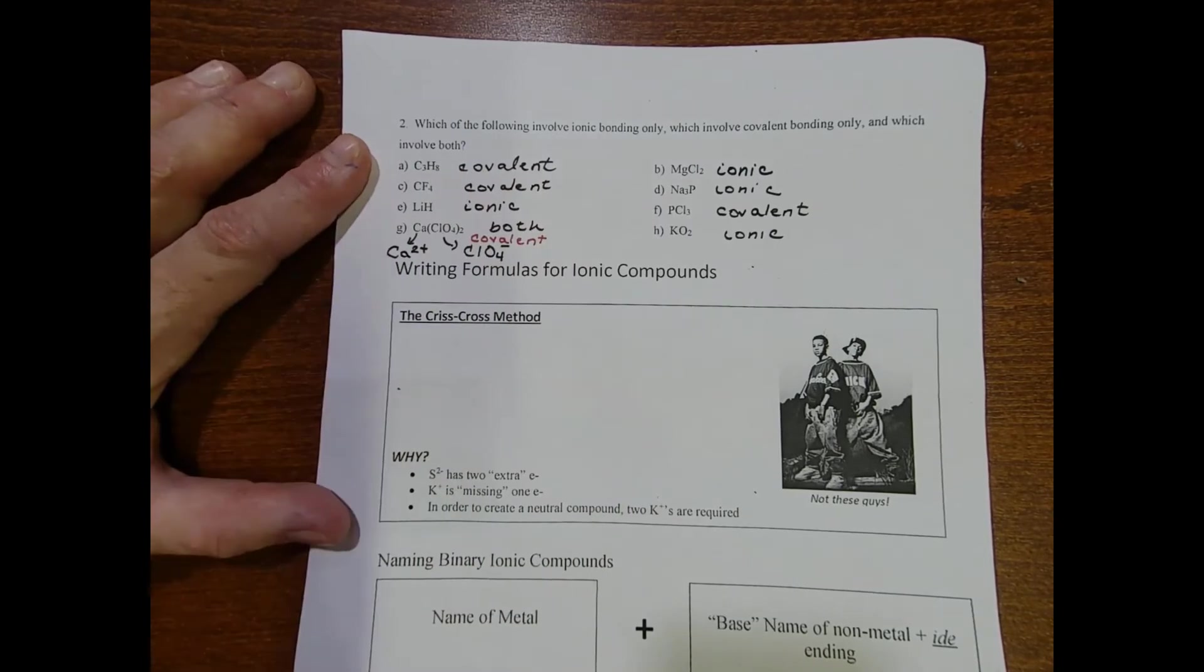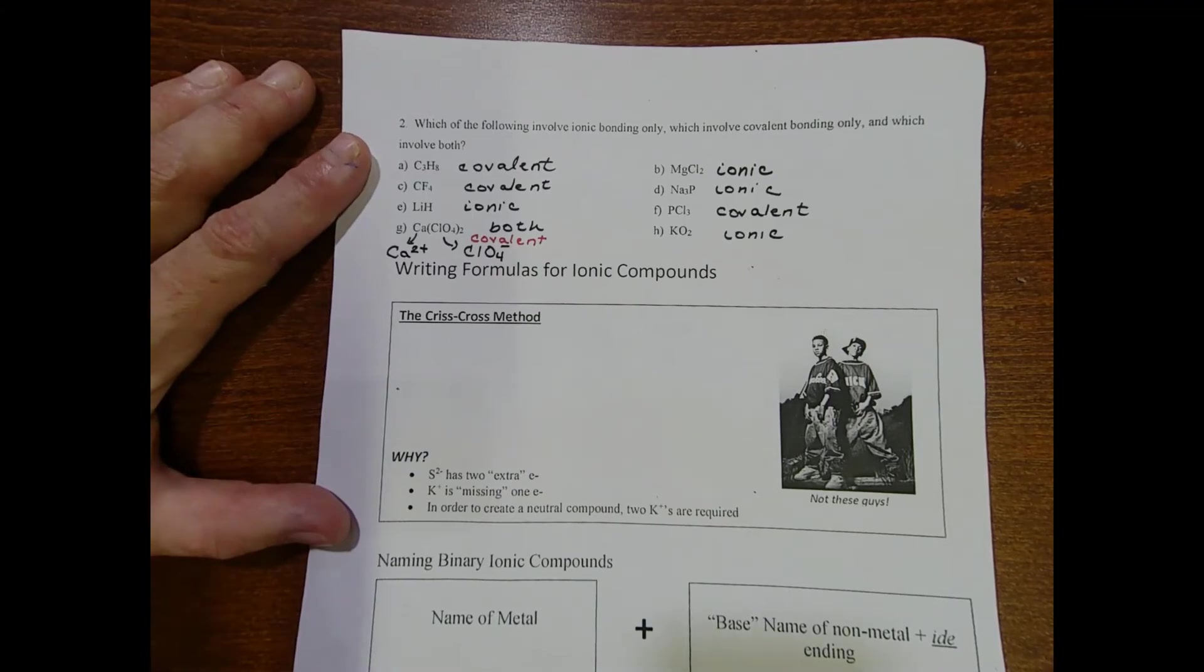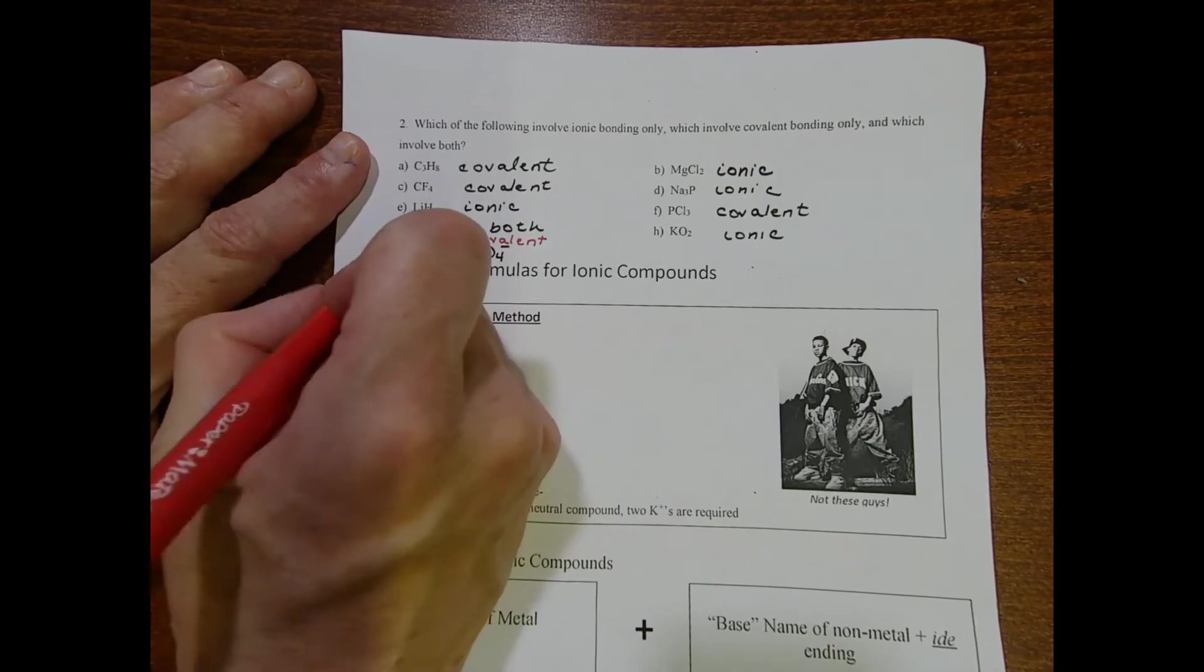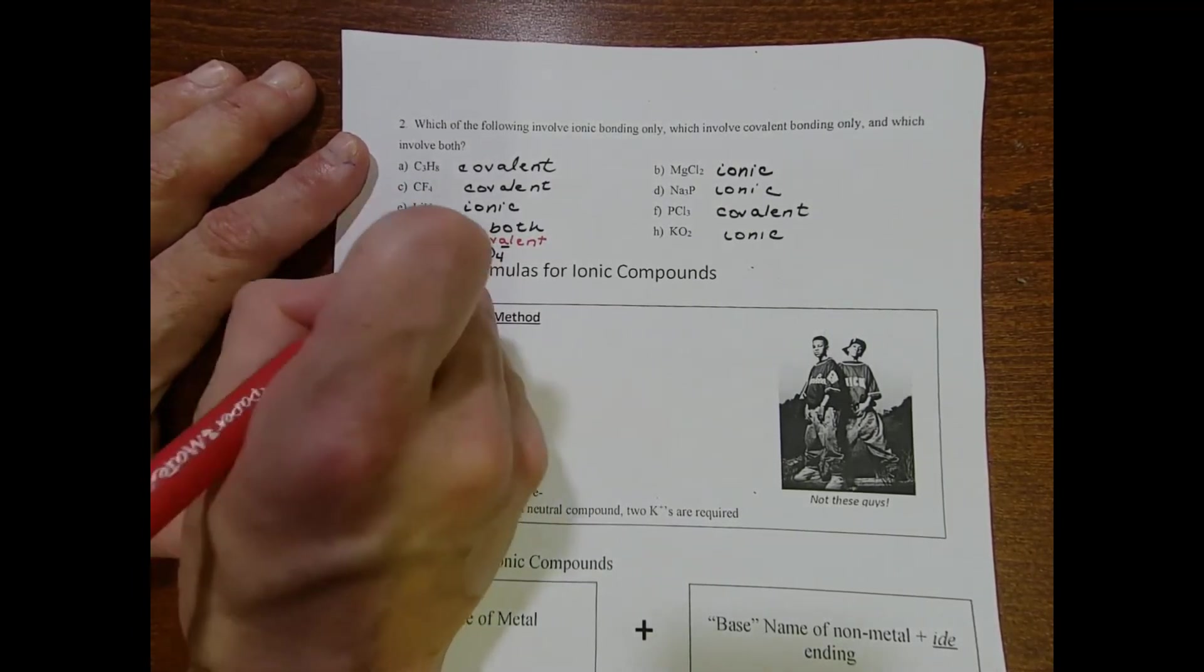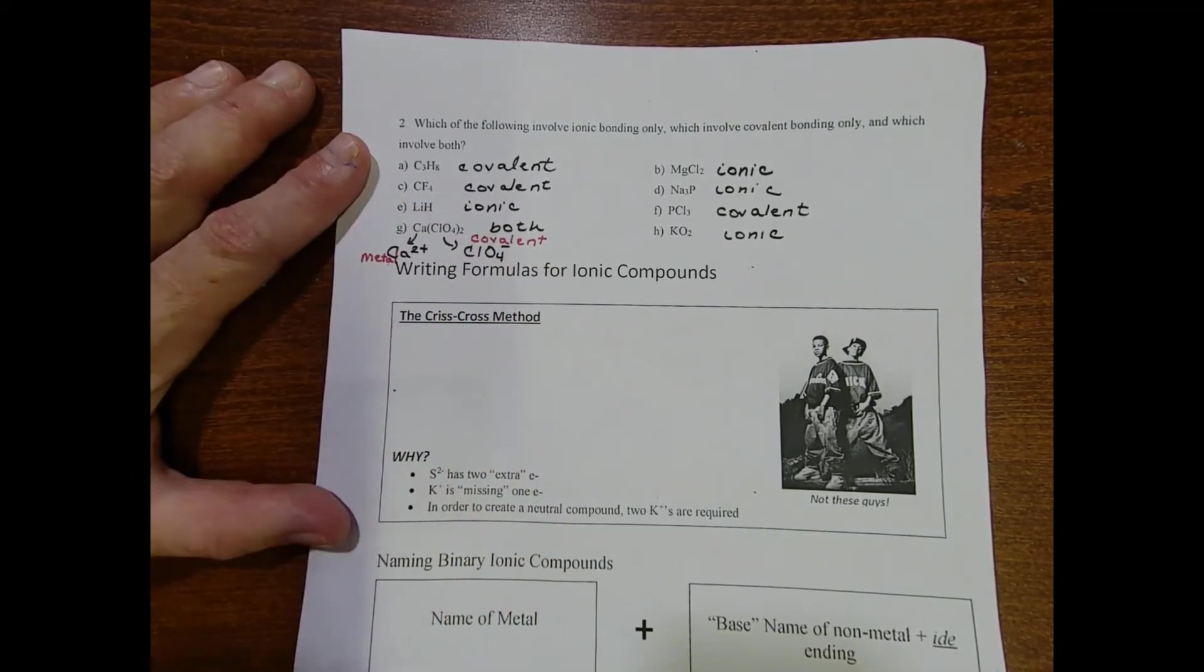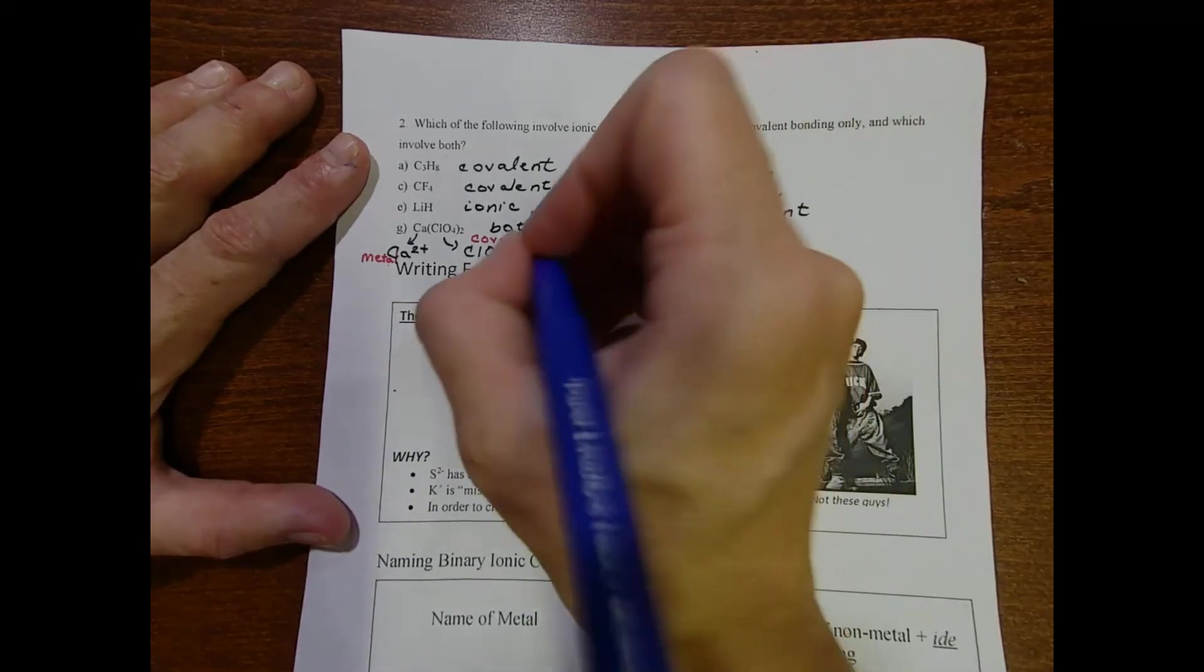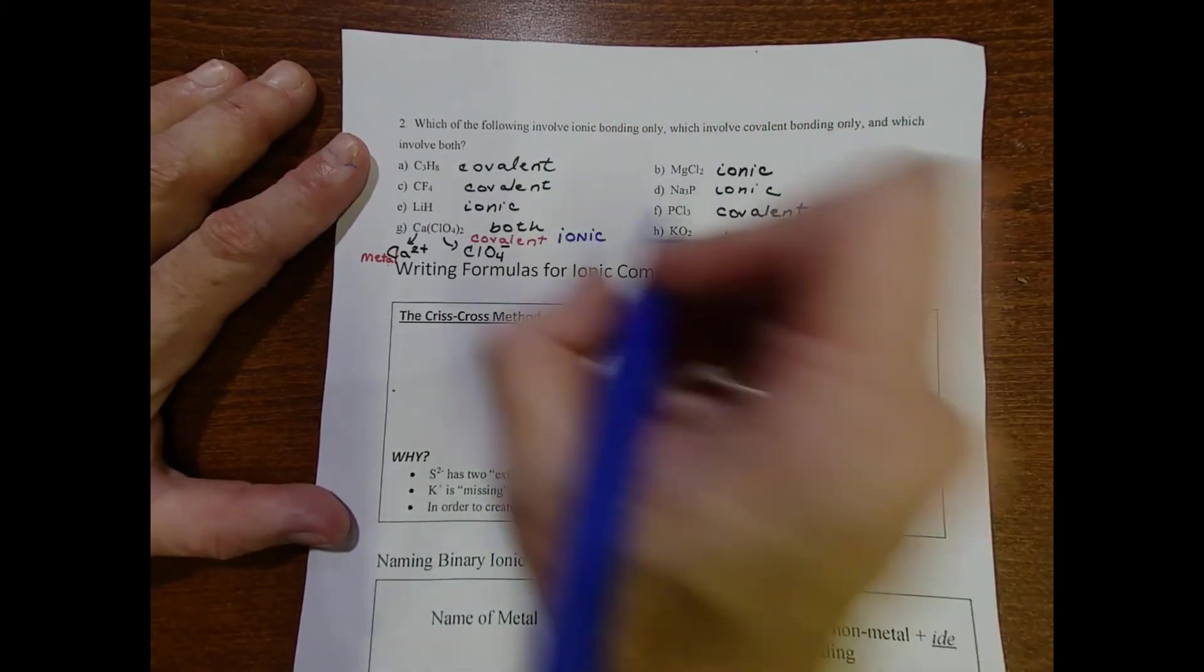There are some exceptions but generally speaking you're going to see a very covalent nature to your polyatomic ions. Then you have this metal. In theory you have a metal hooking up with a nonmetal - these are all nonmetals - so at the end of the day you're going to use the ionic approach to name something that's a combination of both.